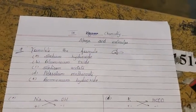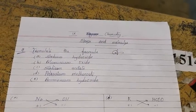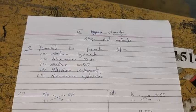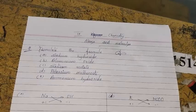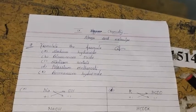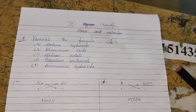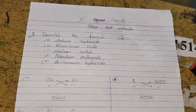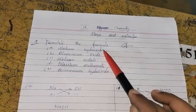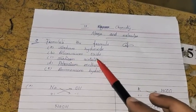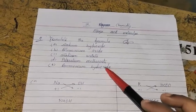Dear students of class 9, we are studying atoms and molecules — the third chapter of chemistry. So far we have already studied about atomic number and how to formulate the formula of different compounds. In this video, we will again learn how to formulate the formula of some compounds using the criss-cross method. The question is: formulate the formula of sodium hydroxide, aluminium oxide, sodium acetate, potassium methanoate, and ammonium hydroxide.